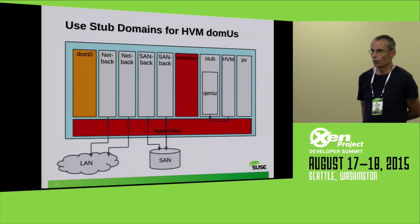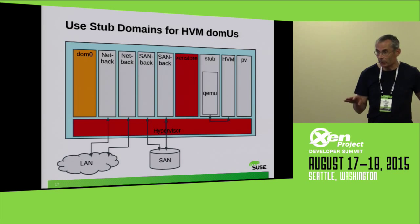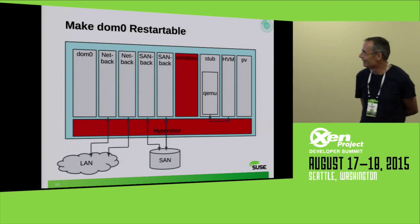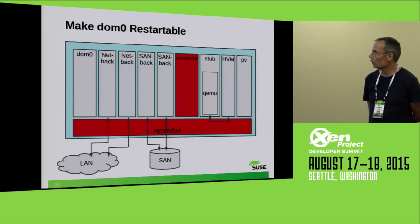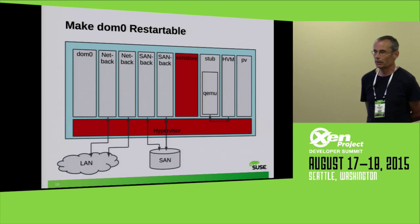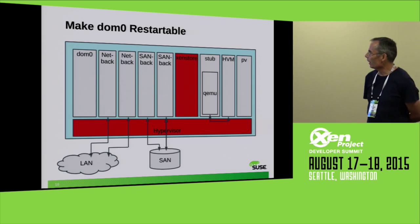We need to make DOM0 restartable. How to do it is another topic, but I think it should be doable. When I was working at Fujitsu, we had a mainframe virtualization system called VM2000 where this was possible — the controlling domain running on a type-1 hypervisor could be restarted and the system survived. I think Xen should be able to do the same.